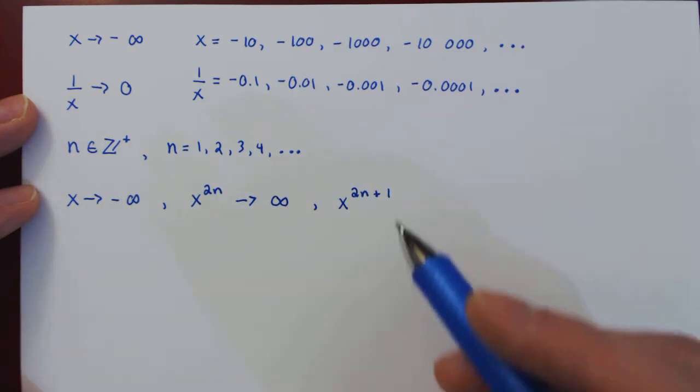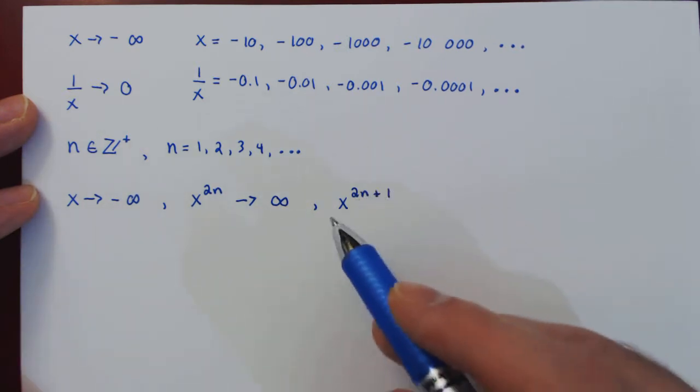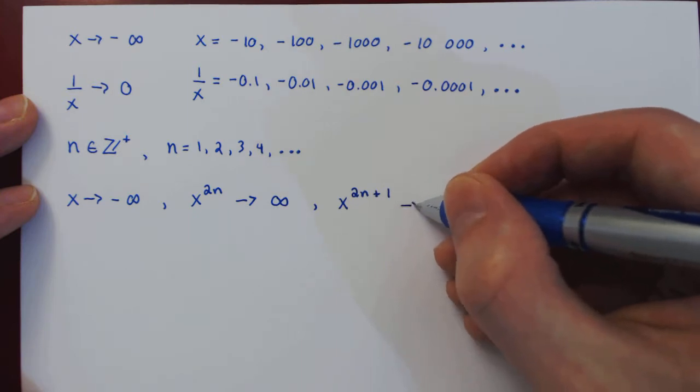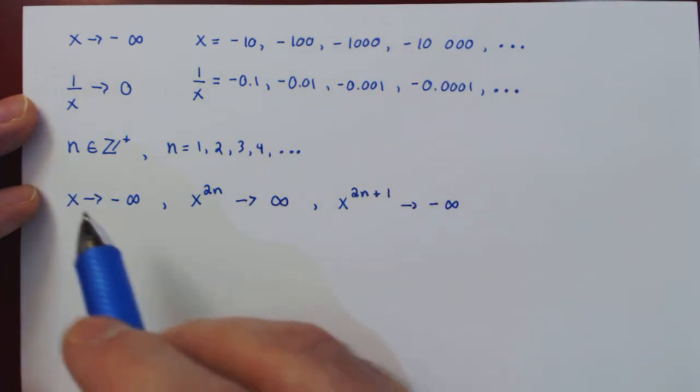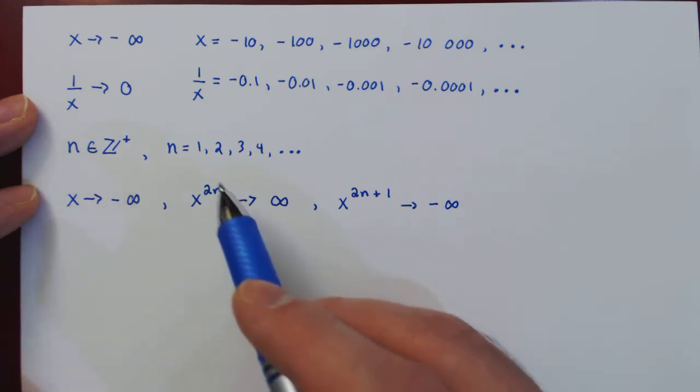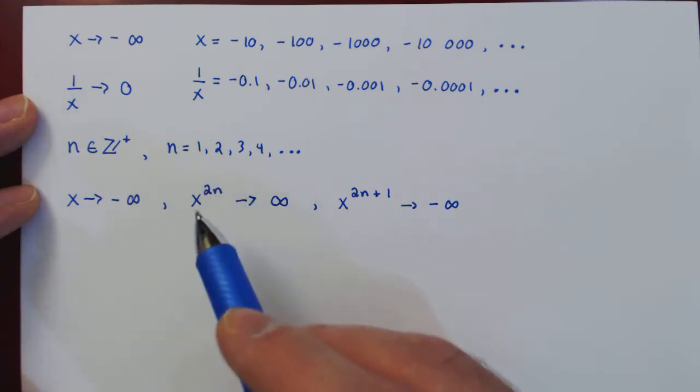So as x goes to negative infinity, any odd power of x will also be approaching negative infinity. So you have to be careful considering x approaching negative infinity and looking at a positive power of x.